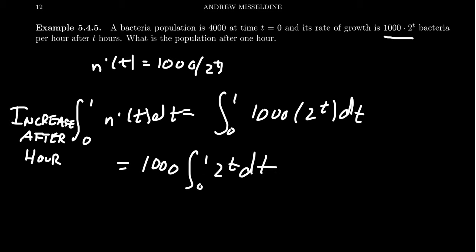So we need to find a function whose derivative is 2 to the t. That is how we calculate anti-derivatives. Now we know for a fact that the derivative of e to the x equals e to the x, and that tells us the anti-derivative of e to the x dx equals e to the x plus a constant. But things are a little bit different when you work with base two.